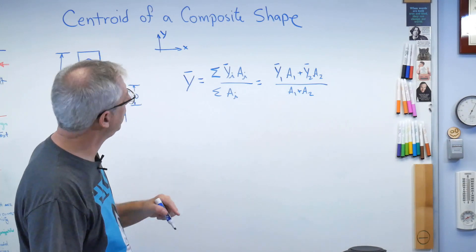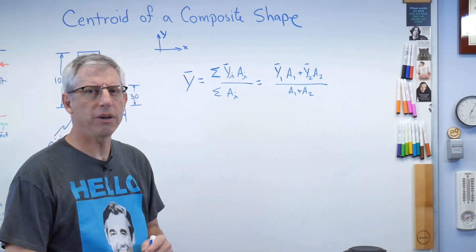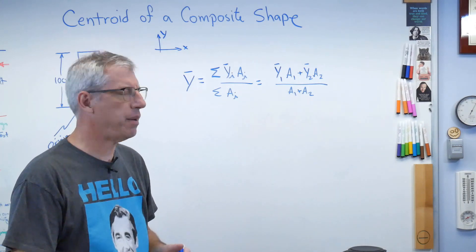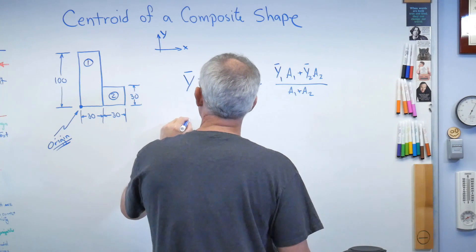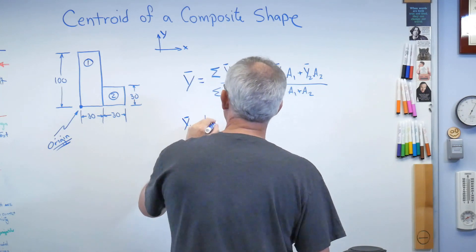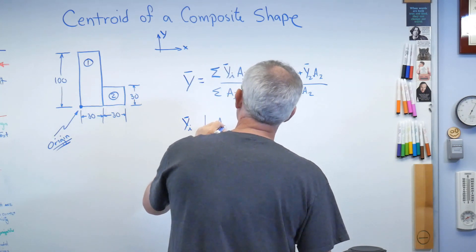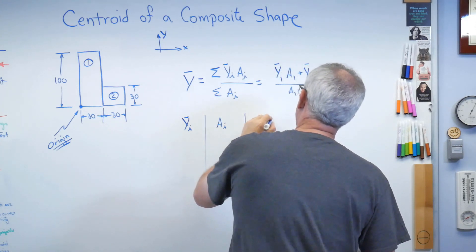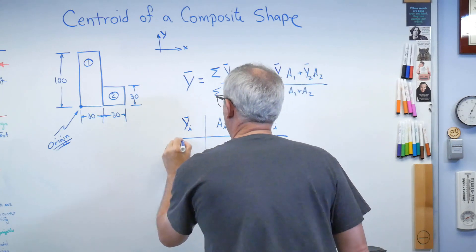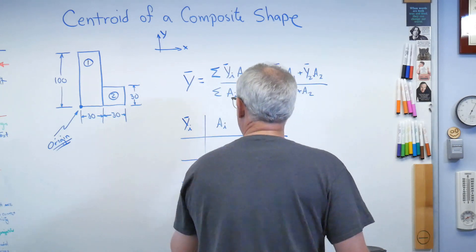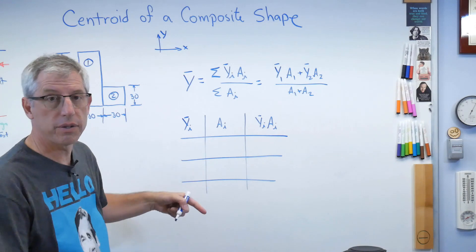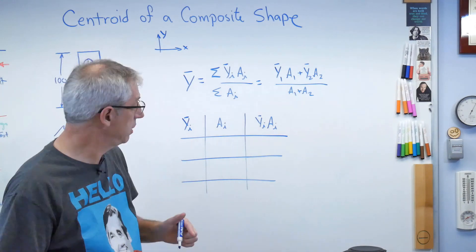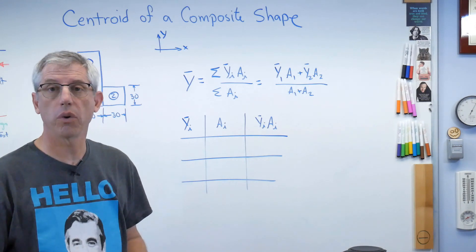You can work it out that way, but it also works pretty well as a table. Let's do a table with columns: y-bar-i, A-i, and y-bar-i times A-i. If you've got a composite shape made out of more than two boxes, this table just has more and more rows in it.